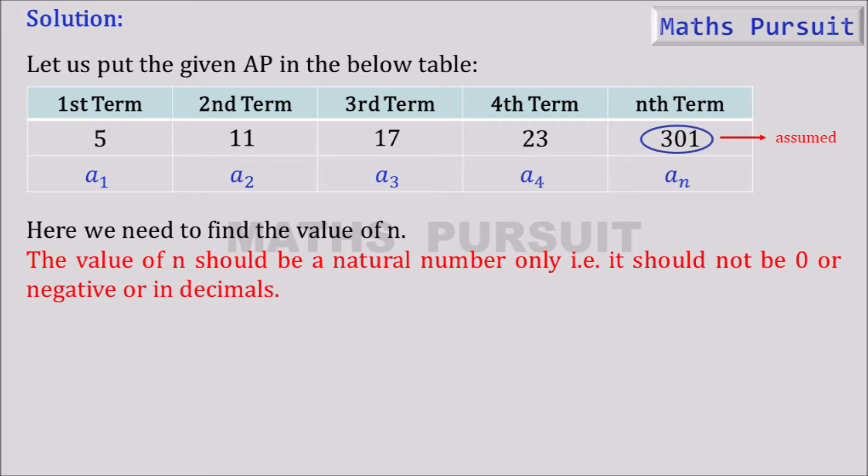Because we need to find if 301 is a value among the given series. So we need to find out nth term. If n is a natural number then only it satisfies the condition and we can ensure that 301 is a value. So let's see.